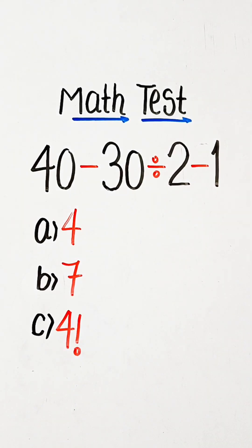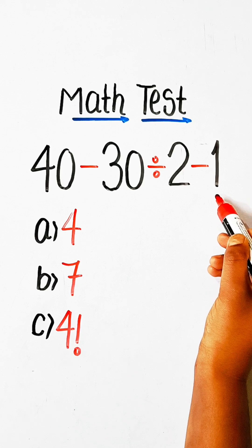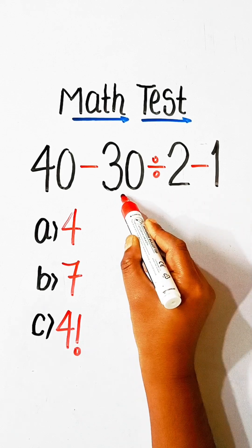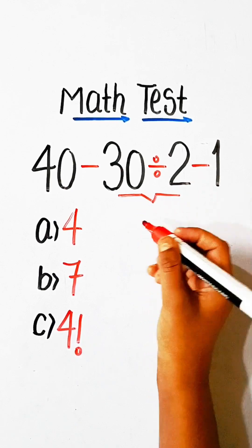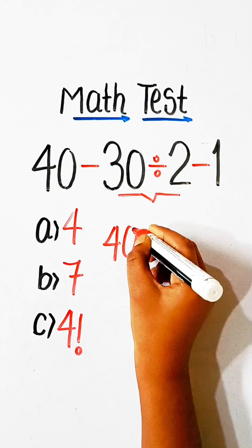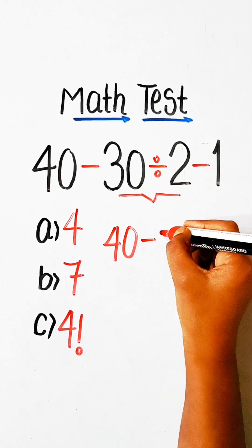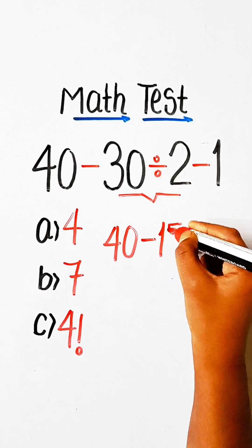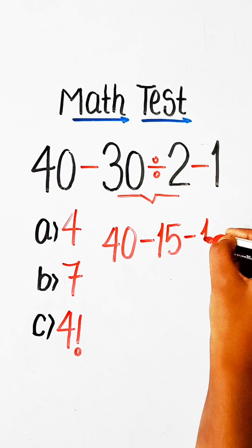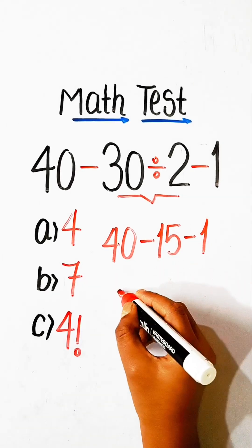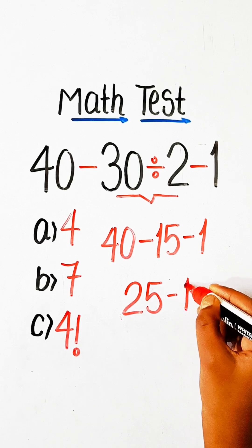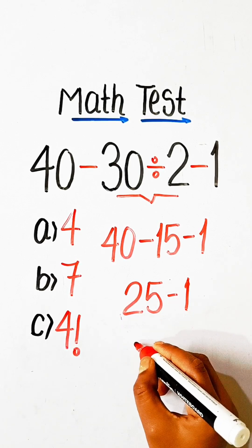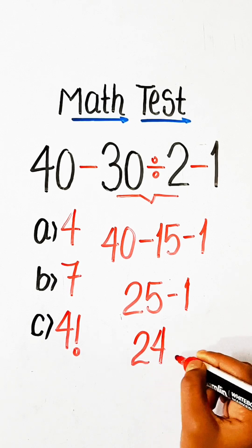Now it's time to solve this math expression. Division comes first, so we can write: 40 minus (30 divided by 2), which is 15, minus 1. That gives us 25 minus 1, and 25 minus 1 is 24.